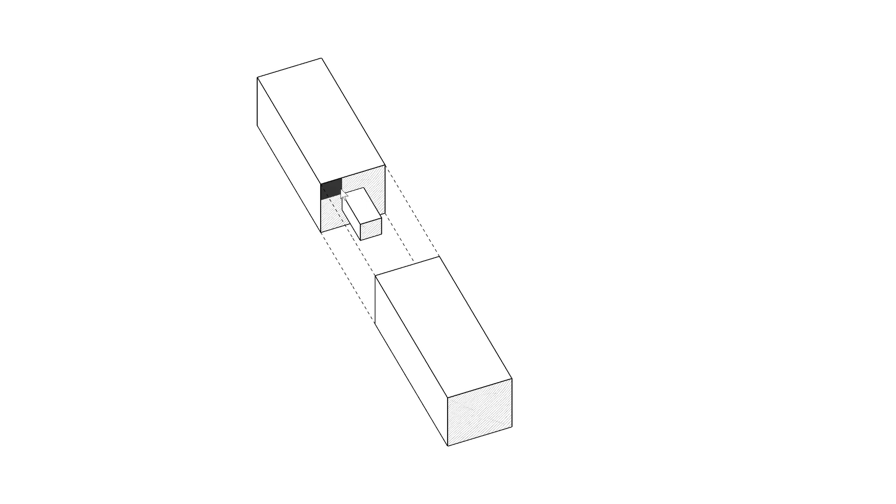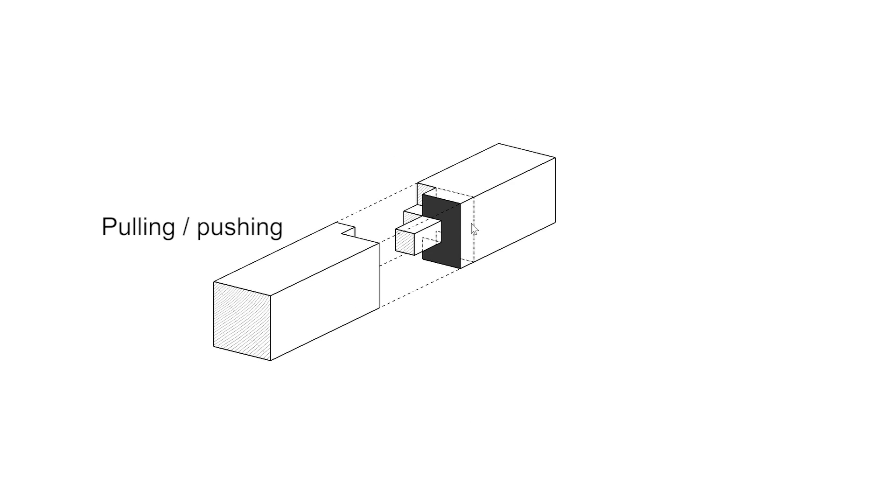In Tsugite, the user can easily design a connection by pulling and pushing the voxelized geometry of the joint.